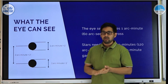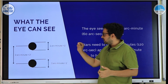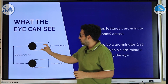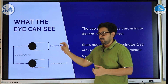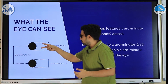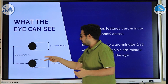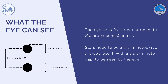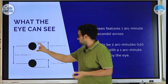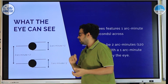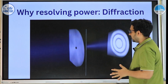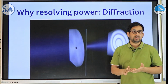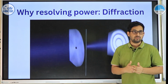Another important point: even if a point object is very small, our eye will make an image of it that is roughly one arc minute in diameter. So to resolve two distinct stars, their center-to-center distance should be around two arc minutes. Even if the point object is much smaller than this one arc minute size, it will still appear as one arc minute in diameter. This happens due to the diffraction property of light — light behaves as a wave.